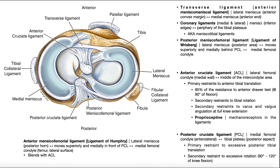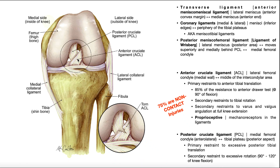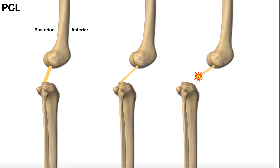Here we can see the lateral movement of the PCL as it goes down. To see the posterior movement, we look at a lateral view of the knee with the fibula visible here. Here's your femur, tibia, and you can orient anterior and posterior. One of the jobs of the PCL is to restrict posterior translation of the tibia relative to the femur. The ACL did the opposite — it restricted anterior tibial translation. The PCL restricts posterior tibial translation.